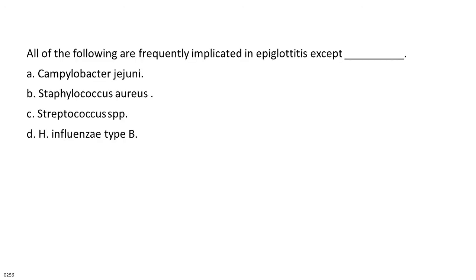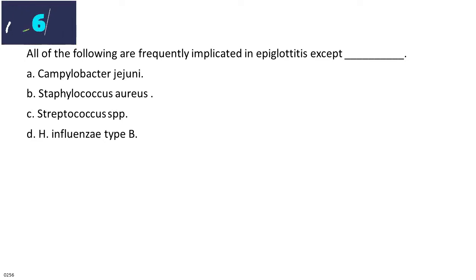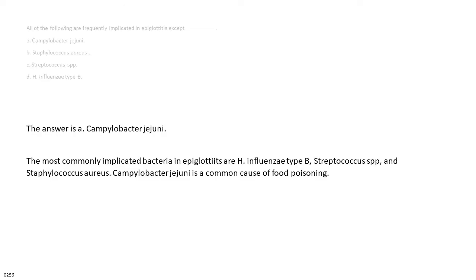All of the following are frequently implicated in epiglottitis except: A. Campylobacter jejuni. B. Staphylococcus aureus. C. Streptococcus spp. D. H. influenzae type B. The answer is A. Campylobacter jejuni. The most commonly implicated bacteria in epiglottitis are Haemophilus influenzae type B, Streptococcus species, and Staphylococcus aureus. Campylobacter jejuni is a common cause of food poisoning.